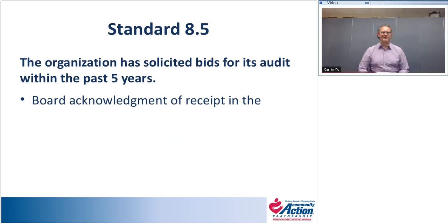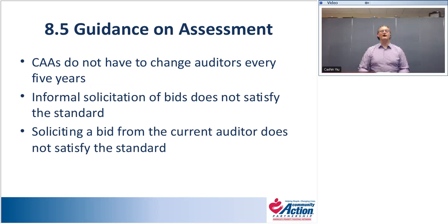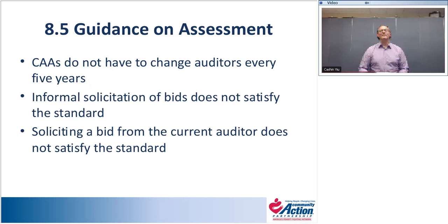Standard 8.5: The organization has solicited bids for its audit within the past five years. The standard does not require changing auditors every five years. Informal solicitation of bids does not satisfy the standard — you need a formal solicitation. Soliciting a bid from the current auditor alone also does not satisfy the standard. You need a general solicitation from multiple auditors, ideally an open solicitation from a larger list.